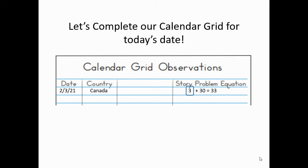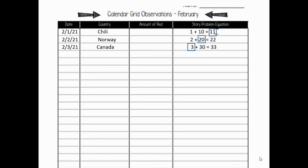Good job, second grader. Let's add this to our calendar grid for today. As you can see, this is February 3rd. The country is Canada, and our story problem equation is 3 plus 30 equals 33. Let's add that to our other observations for this month so far.